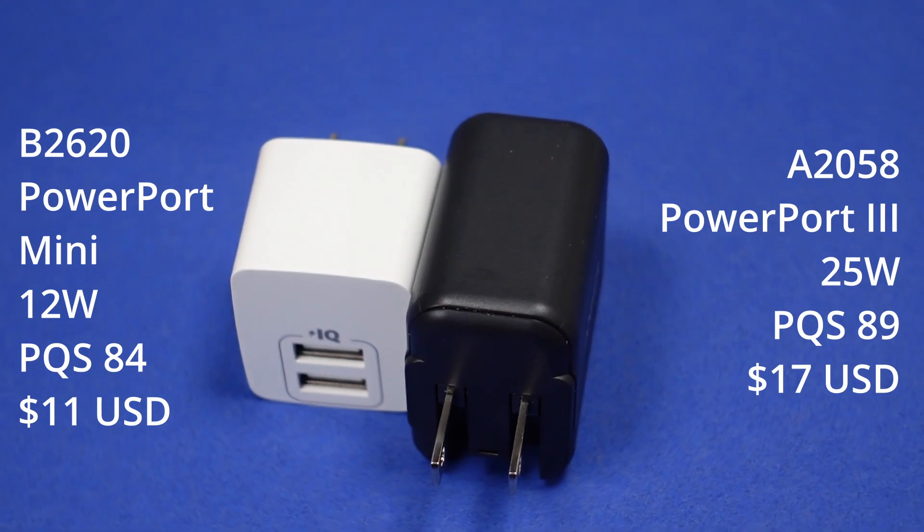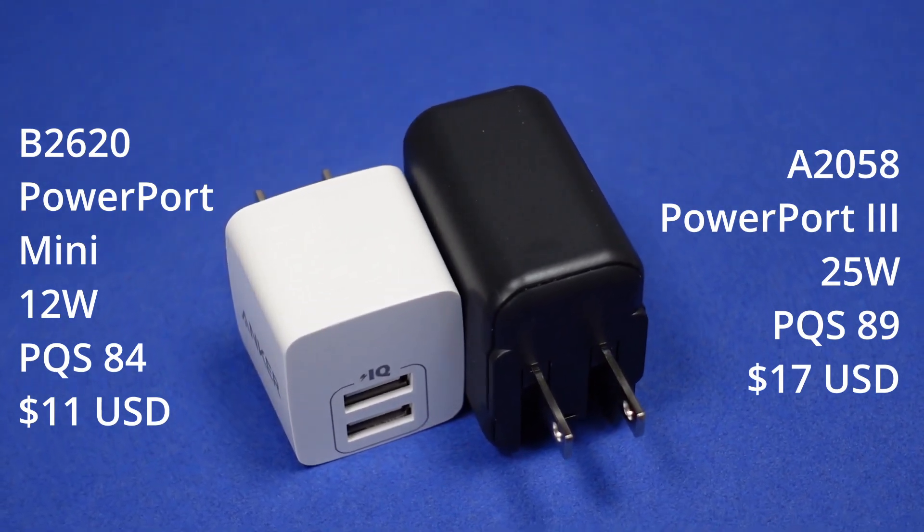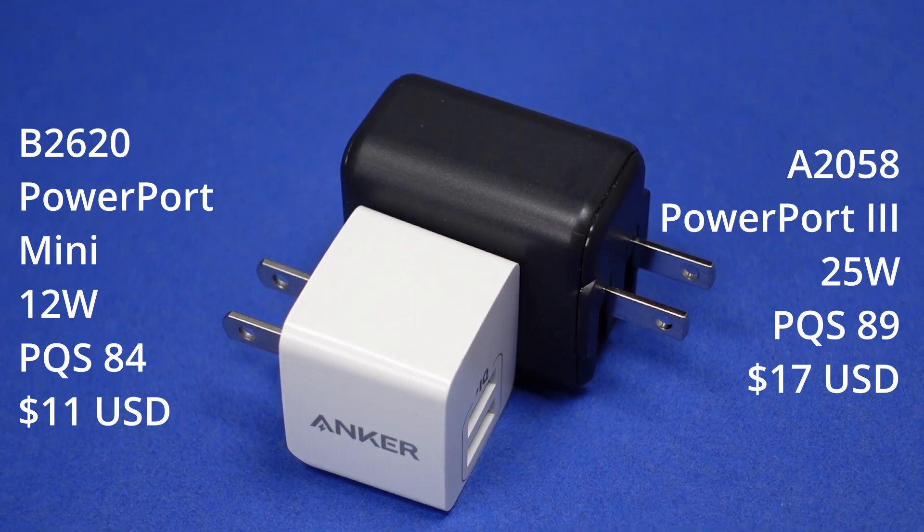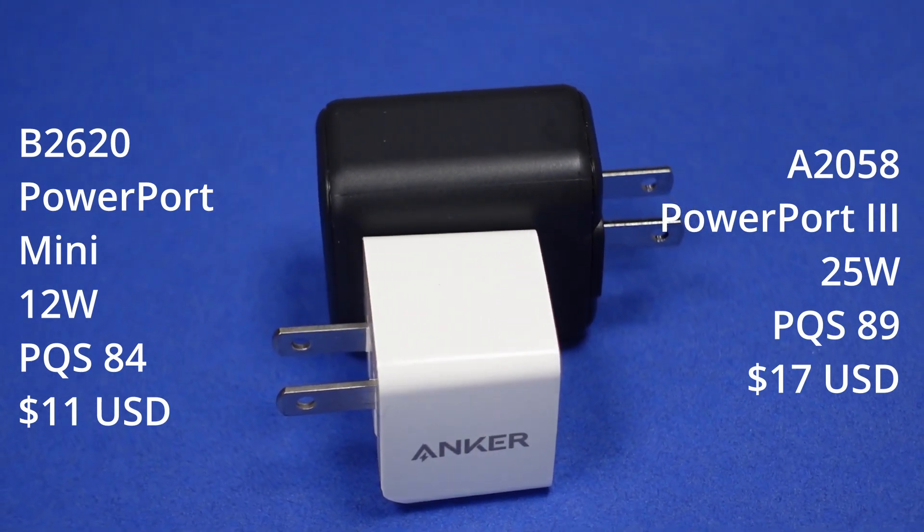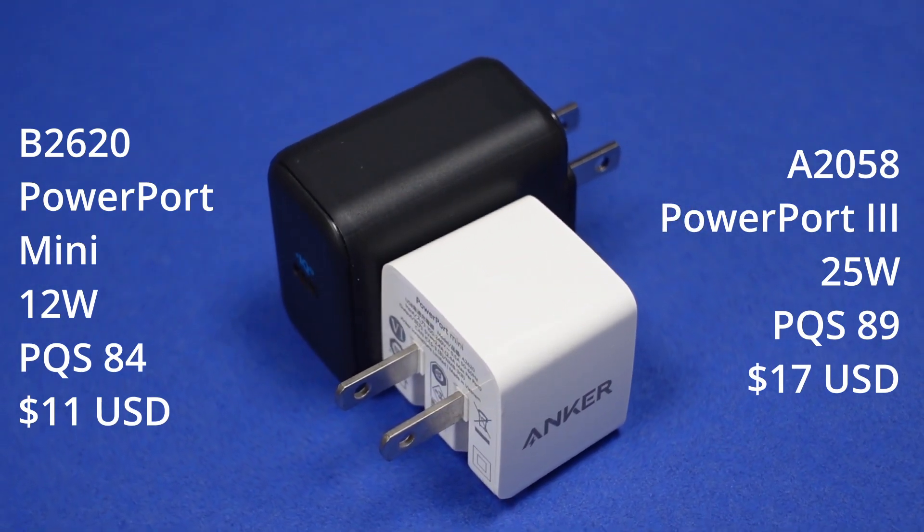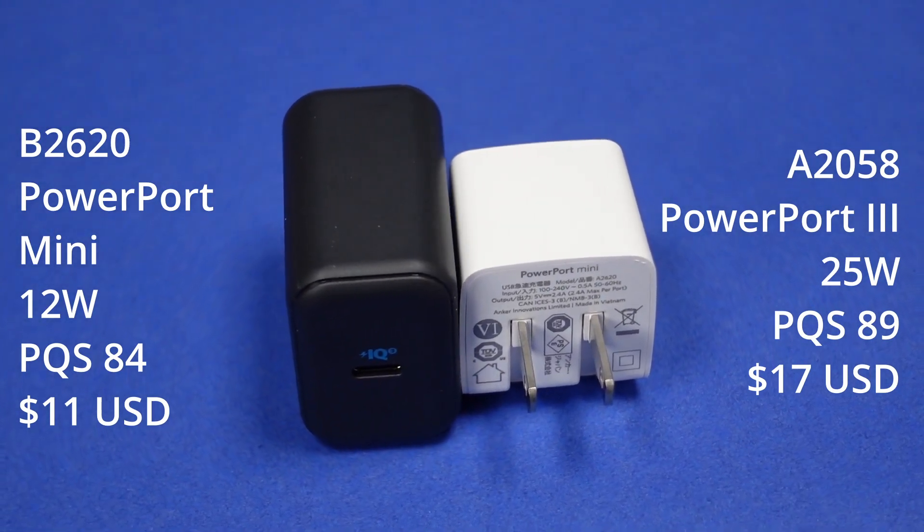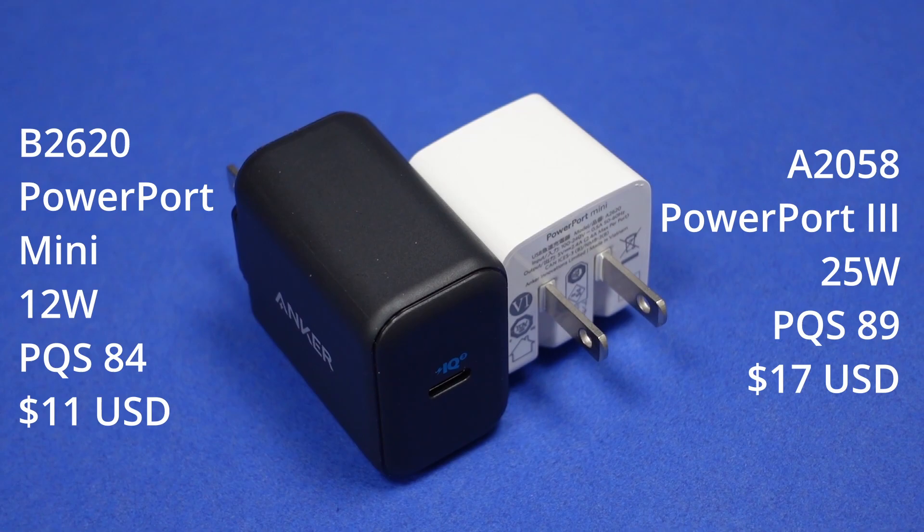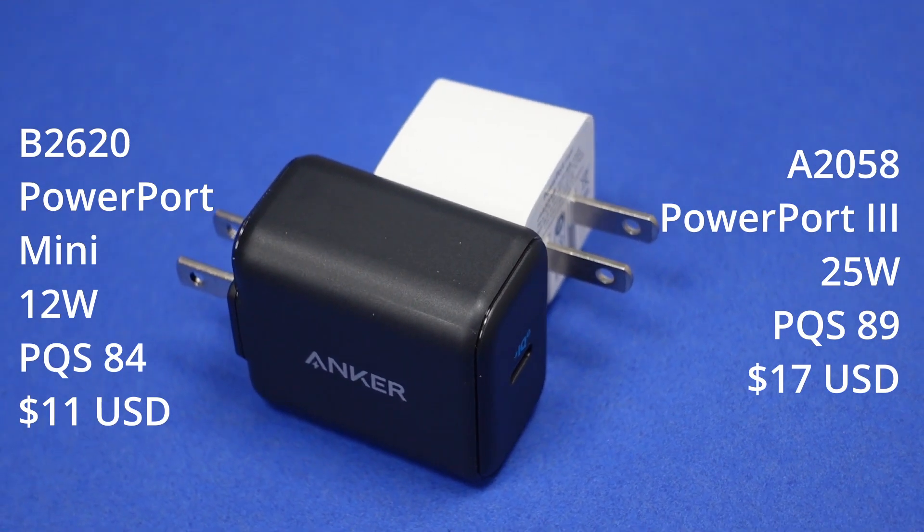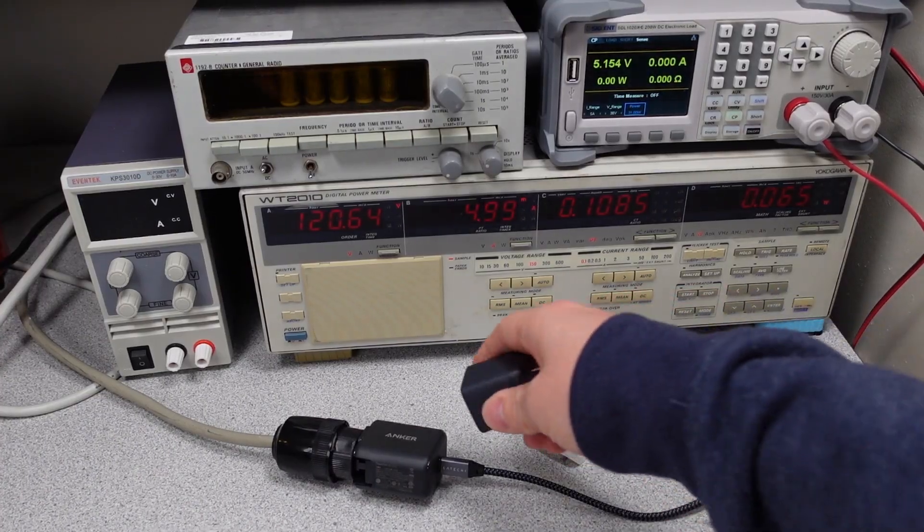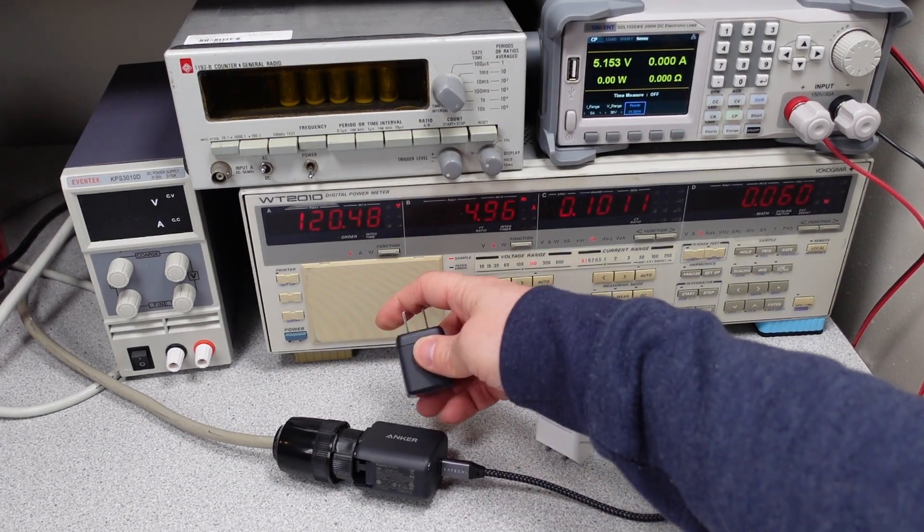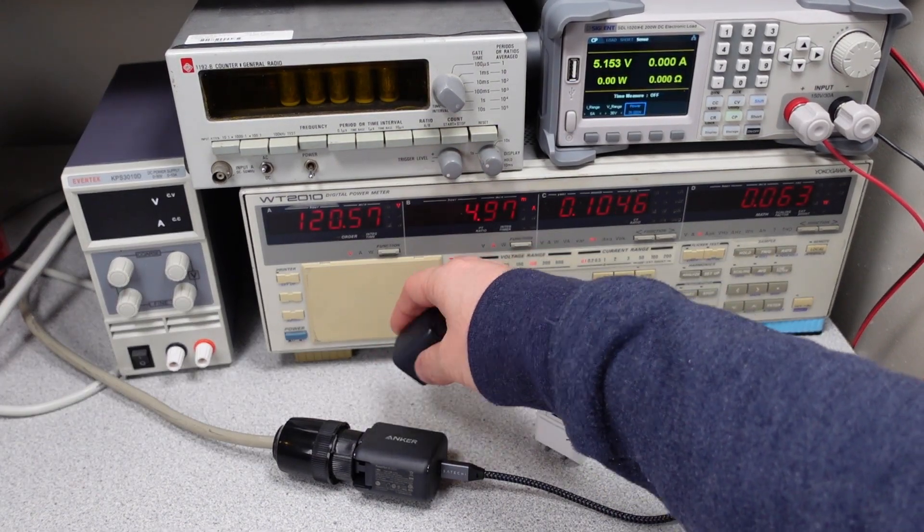So overall, between these two devices, I would have to say the Anker PowerPort 3 25W is not a bad choice. It has the safety listings, it has better than advertised specifications. It's a little bit on the large side, but overall it's not too bad of an adapter. The cost of this adapter is about $17, so it's not too expensive, and you get reasonable performance. And just for comparison's sake, this is the Anker Nano 2 30W adapter, and you can see it's different.